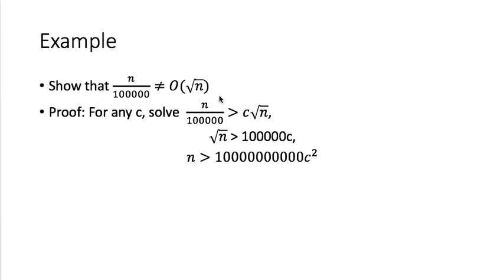To prove this, the first step is to solve the inequality. Suppose you give me any constant c. I want to find n such that n/100,000 is greater than c times √n. To solve this, I multiply 100,000 on both sides and divide both sides by √n, getting the equivalent inequality: √n is greater than 100,000 times c.